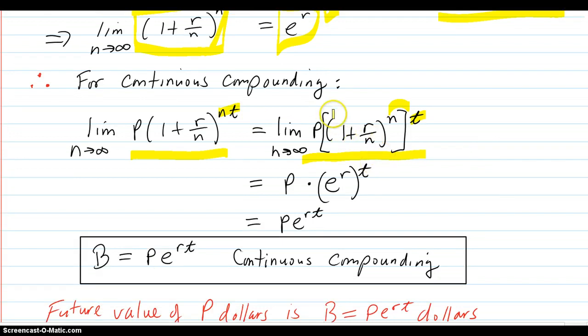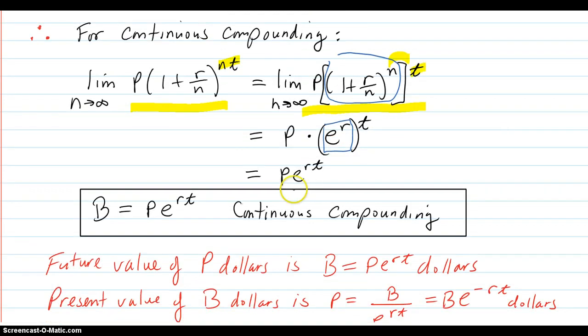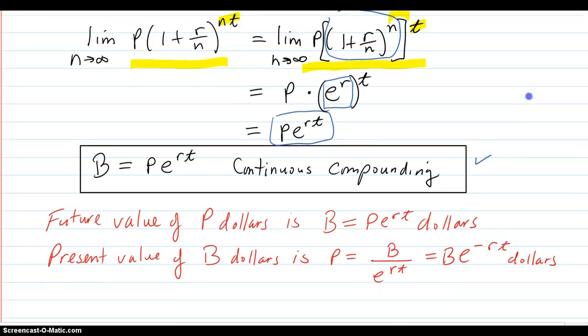This inside part, inside here, is, that's the part that goes to e to the r. So, the whole thing goes to P, e to the r, T. So, there's your compounding, continuous compounding interest formula.